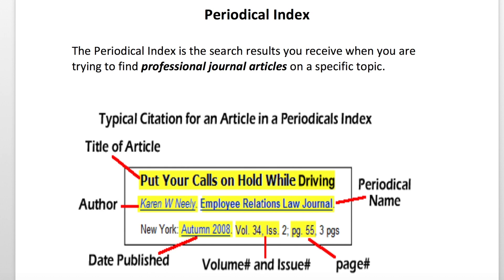Lastly, I want to teach you about one more reference material. I did not include this in my previous video — I apologize — but it's very important that you know this: the periodical index. When you go to the campus library and do a search for a journal article, say you're writing a paper on autism and you get a listing of all the different journal articles related to autism — that's the periodical index. It will include the author's name, the name of the journal, the publication information, and the page numbers.